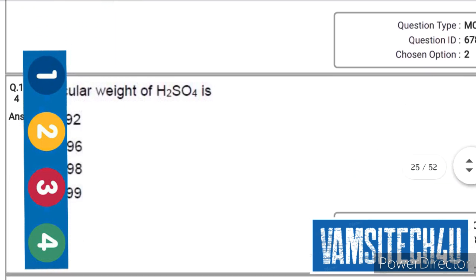The molecular weight of H₂SO₄ is... the right option is third one, that is 98.